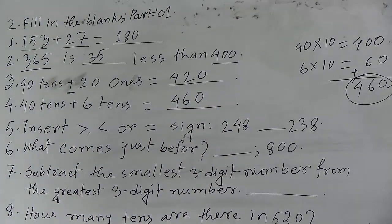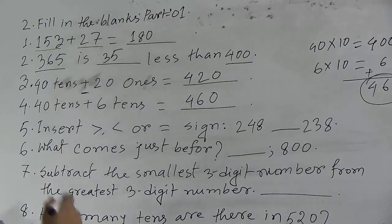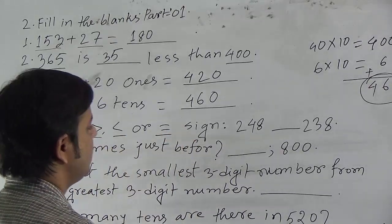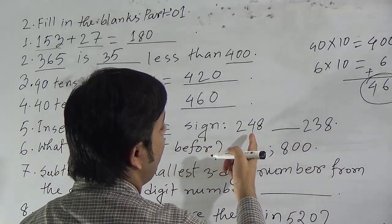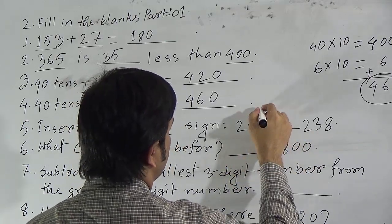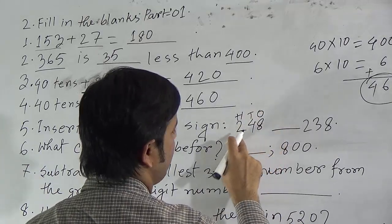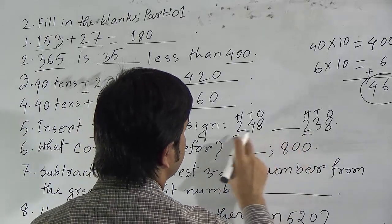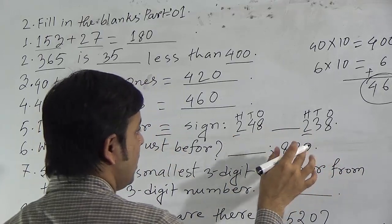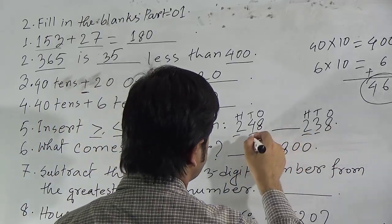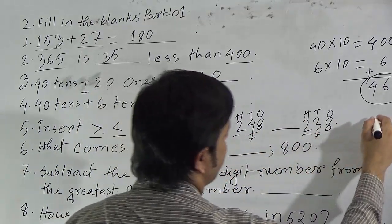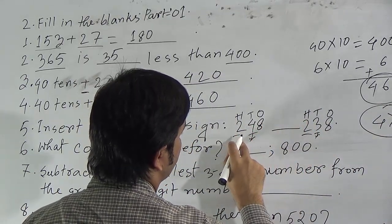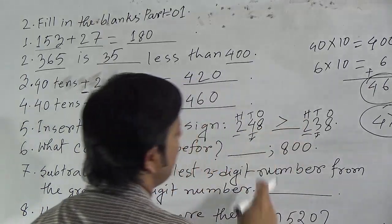Question 5: Insert the sign — greater than, smaller than, or equal. To insert the sign we need to compare the two numbers. First we compare the hundreds place, which is the same in both numbers. Then we compare the tens place: the first number has 4 in tens place and the second has 3. Since 4 is greater than 3, the first number is greater, so we put the greater than sign.